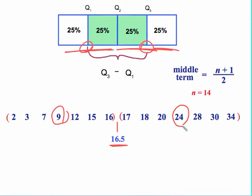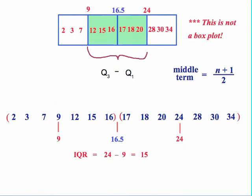So seven plus one is eight divided by two is four. So I know that the fourth term will be the median for each of the halves. That's the fourth term there. One, two, three, that's the fourth term there. Now notice that in this data set, the values for your third and first quartiles actually were values that are part of the data set.